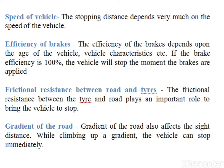The fourth factor is frictional resistance between tyre and road, which plays an important role in bringing the vehicle to a stop. When friction resistance is more, the vehicle stops immediately and sight distance required is less. No separate provision is made for brake efficiency while computing stopping sight distance; it is taken into account along with the factor of longitudinal friction. As per IRC recommendation, the value of longitudinal friction between 0.35 to 0.4 is considered while designing a highway.